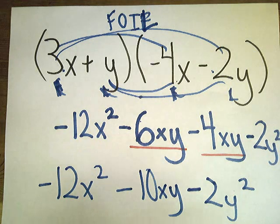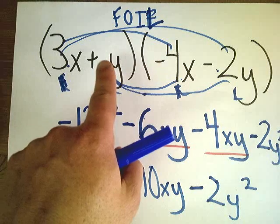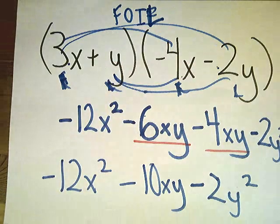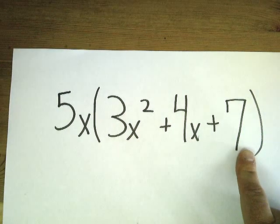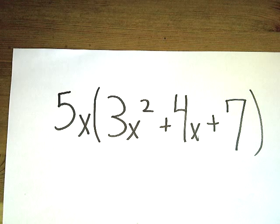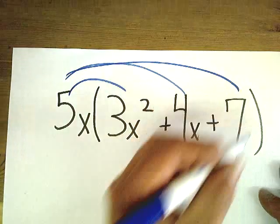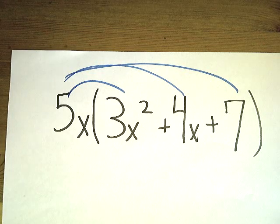One thing I would like to note about this problem is the FOIL method is really just a way to systematically make sure that this number multiplies by both of these terms, and this term multiplies by both of these terms as well. You'll see that y multiplies by the negative 4x and by the negative 2y, and that the 3x multiplies by the negative 4x and the negative 2y. So be aware that that happens, because when we do trinomials, and by that I mean right now, we actually have to use that information.